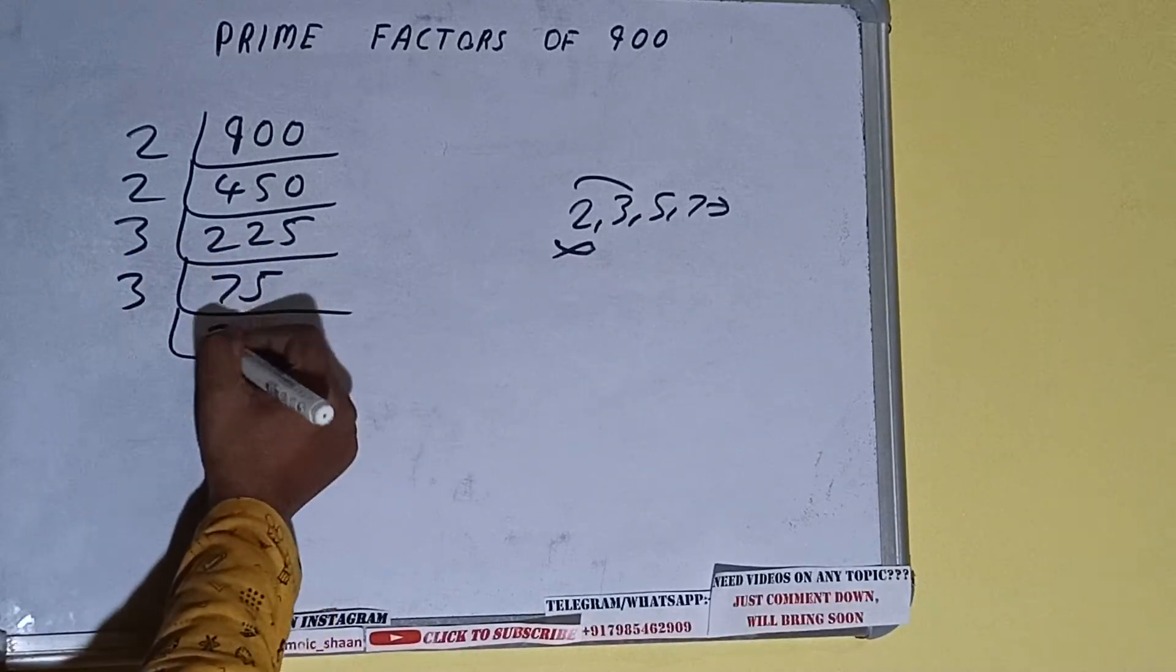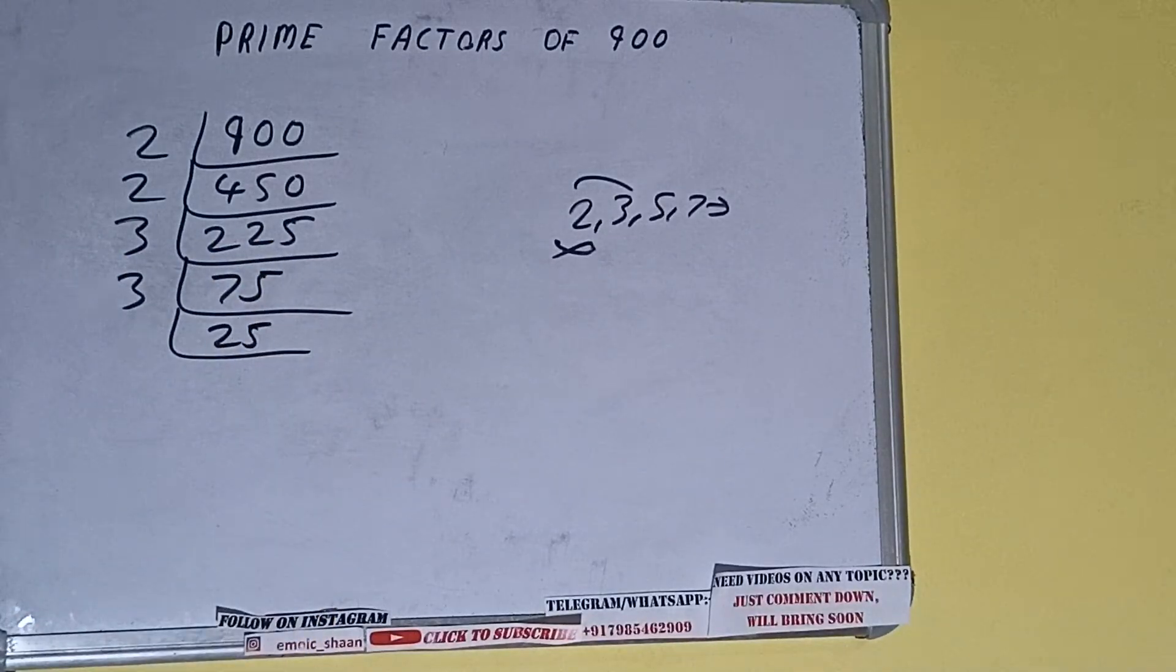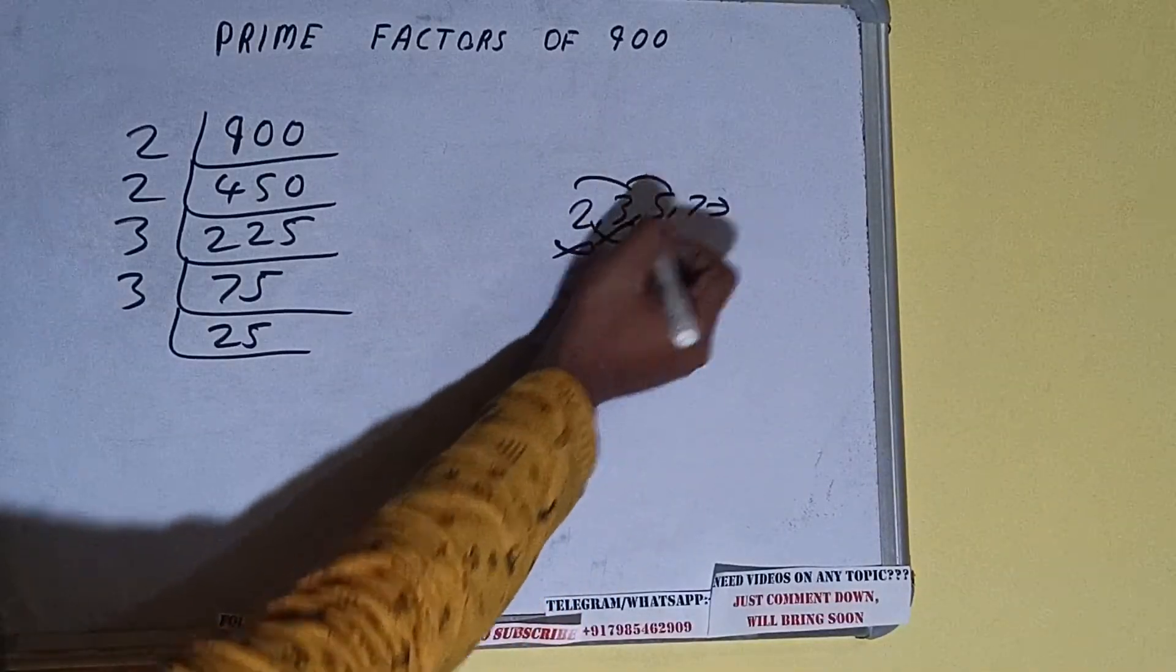25 is not divisible by 3. So we will check with the next lowest prime number, that is 5.